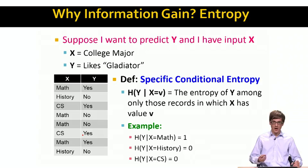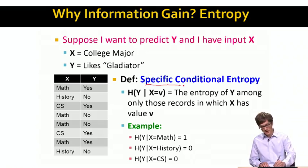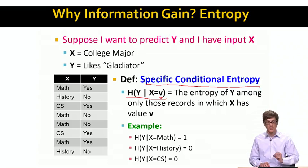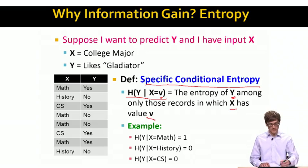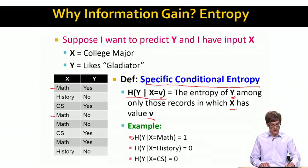Now that I've discussed how to compute entropy, we can introduce the concept of specific conditional entropy. We write this as: what is the entropy of y given x takes a particular value v? This is the entropy of y among only those records for which x has value v. For example, I can ask: what's the entropy of y given that x takes the value math?